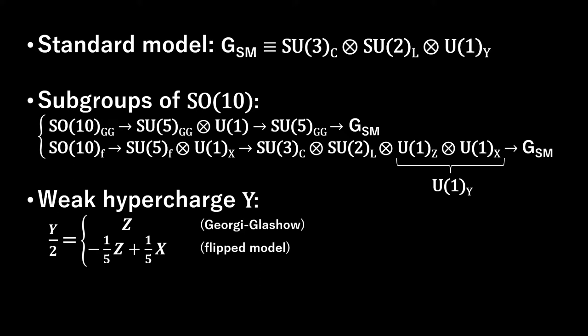X is the quantum number of U1X. The Georgie Glashow model has the standard model color SU-3 cross left-handed SU-2 cross U1Y embedded in the Georgie Glashow SU-5. The flipped model has color SU-3 cross left-handed SU-2 embedded in SU-5, but U1Y is embedded in SU-5 cross U1X.